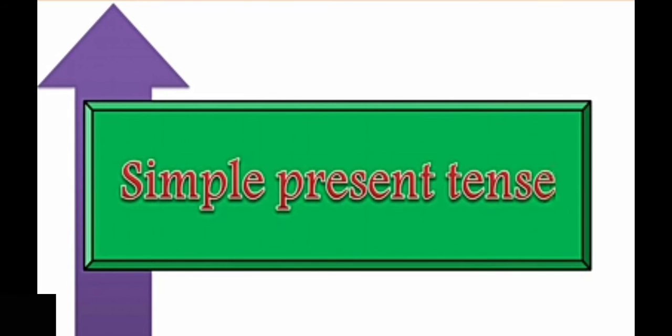Verbs are written in four forms: V1, V2, V3 and V4 — basic form, past form, past participle form and present participle form. V4 is the ing form. In present tense we use V1 form, the root verb.